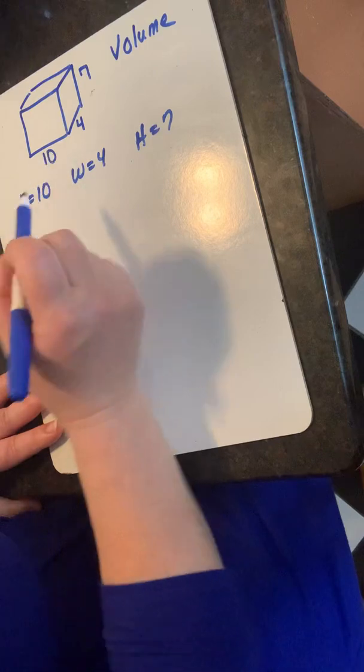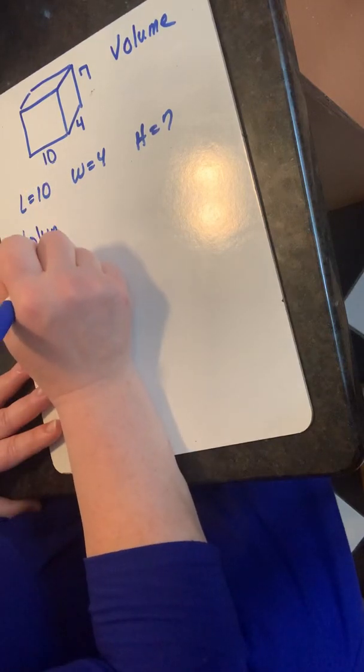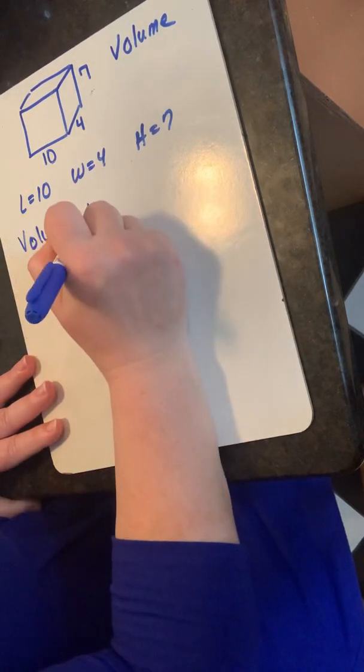To find the volume of this prism, I find the area of the base first and then multiply it by the height.